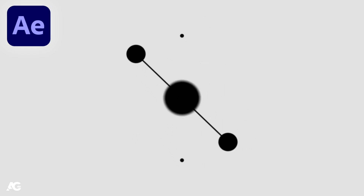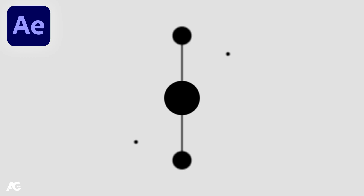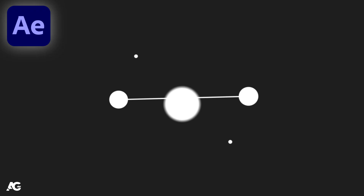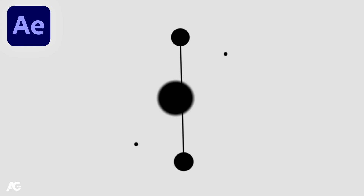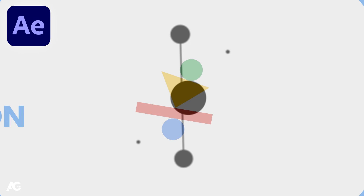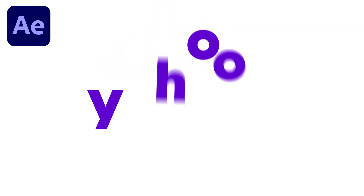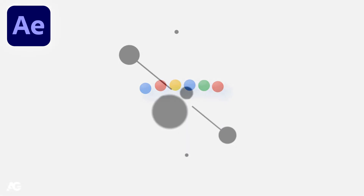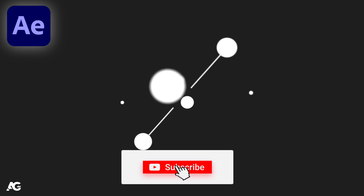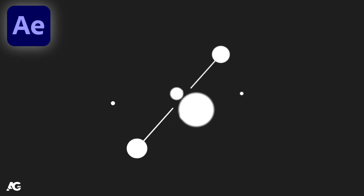Hey guys, welcome back to my channel AG Motion Designs. In today's video we are going to learn how to create a looping animation inside of After Effects without using any third-party plugin, but with simple tricks. If you want to learn more about logo animation and other stuff, check out my Udemy course — link is in the description. If you're new to this channel, please subscribe and hit the bell icon. Let's get started.